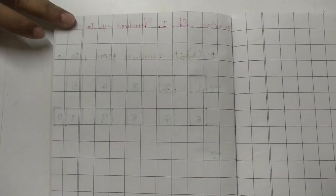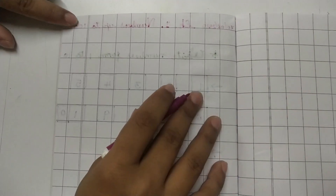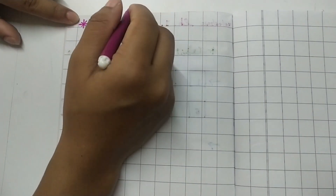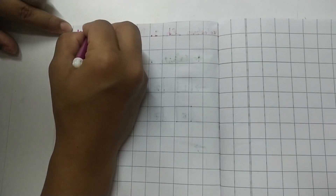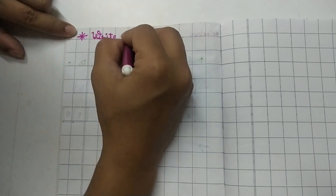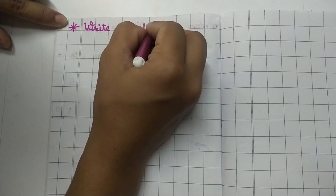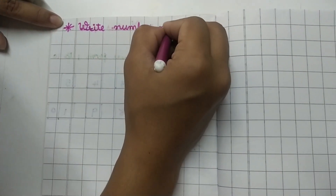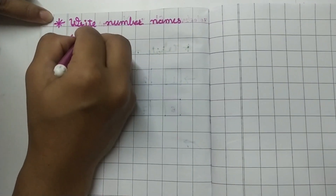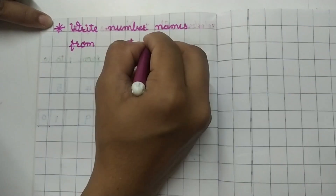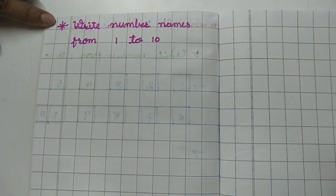Now turn your page. On the new page, in the margin make a star. We will write a new heading: Write Number Names from 1 to 10.